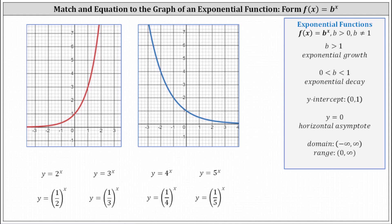Recall all the equations are in the form y equals b to the power of x. For exponential functions, b must be greater than zero and b can't equal one. If b is greater than one, we have exponential growth and the function is always increasing. If b is between zero and one, we have exponential decay and the function is always decreasing.